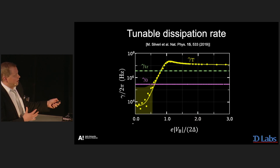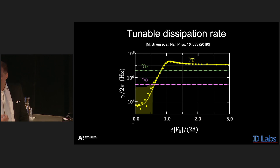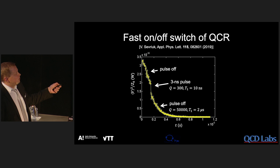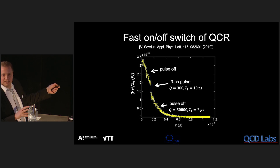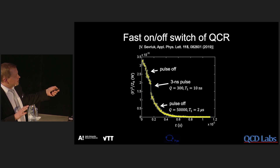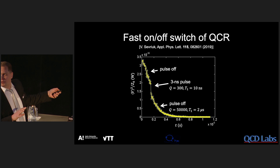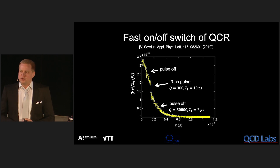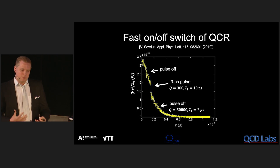Does this work with a pulsed voltage? Here I show the population of the resonator as a function of time, starting from some population and then stopping the excitation so the resonator rings down. During the ring-down, we apply a short pulse to the voltage, and we can see a dramatic drop in population during the pulse, with slow decay resuming after. This shows we can turn the refrigerator on and off very quickly on a timescale of a couple of nanoseconds.